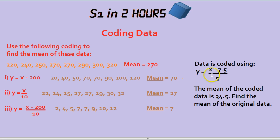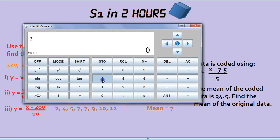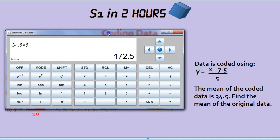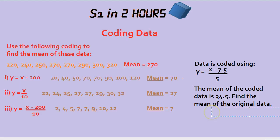So instead of dividing by 5, and by the way, you always start with reversing the dividing, we're going to times by 5. So we'd do 34.5 times by 5. How do we get rid of the take away 7.5? Well, we would add 7.5, 180, and that is how you use coding.